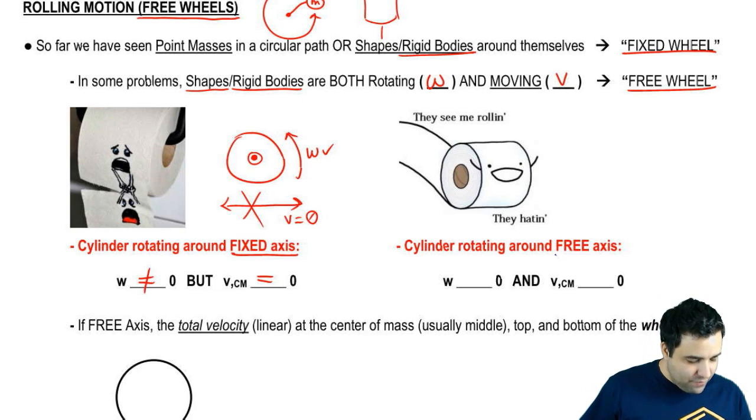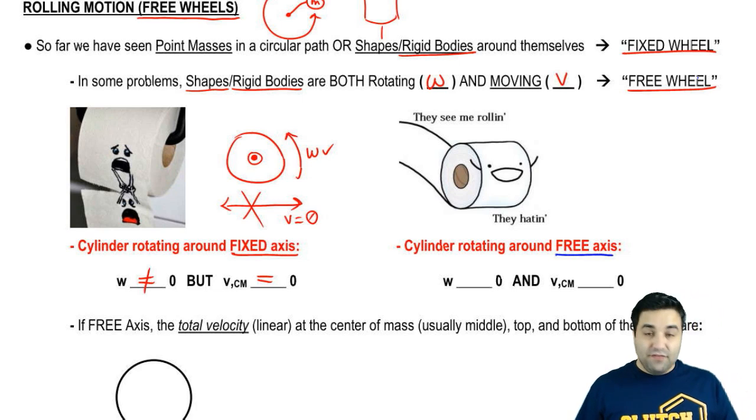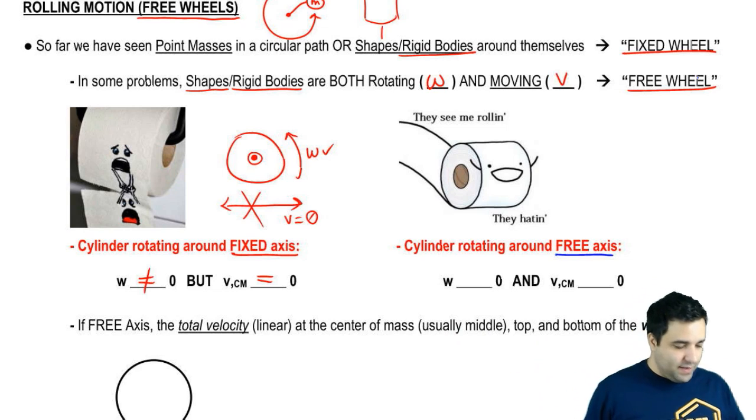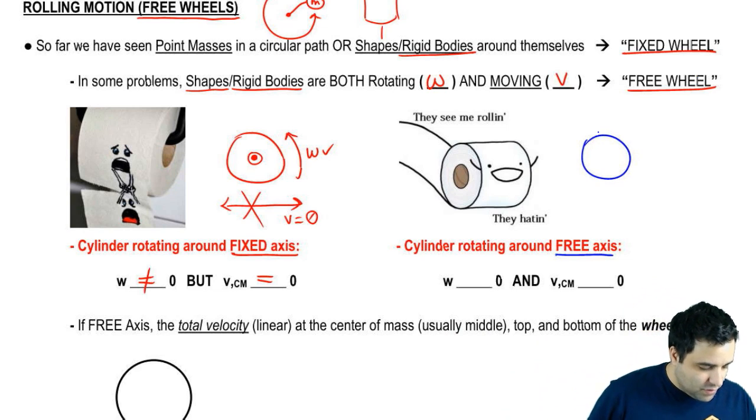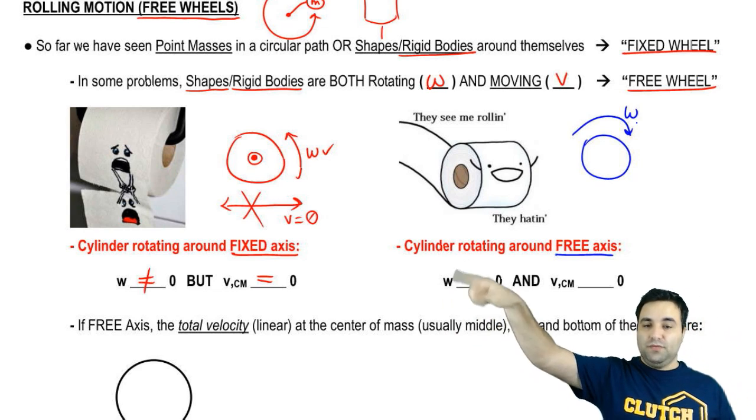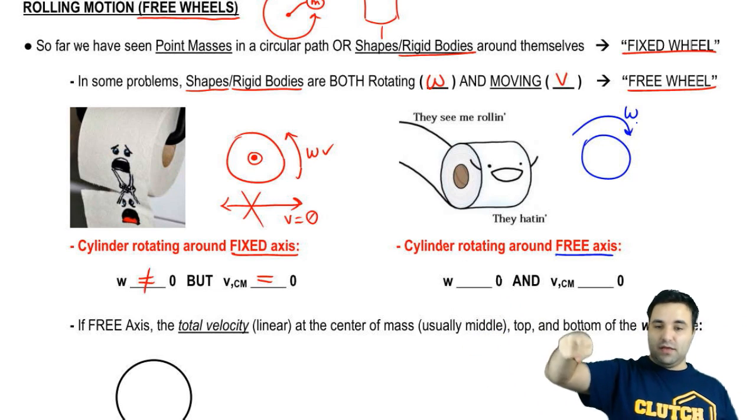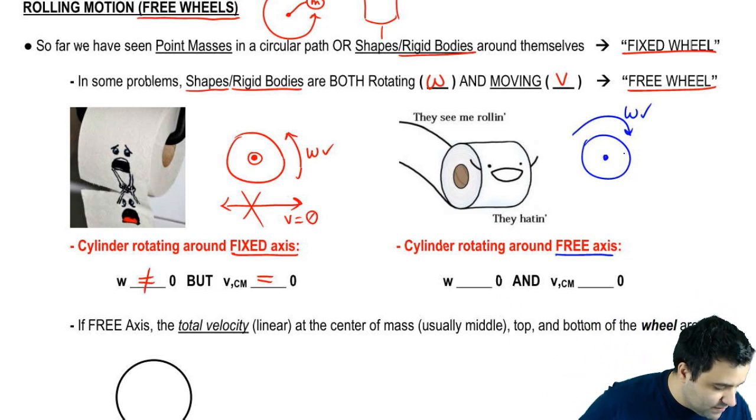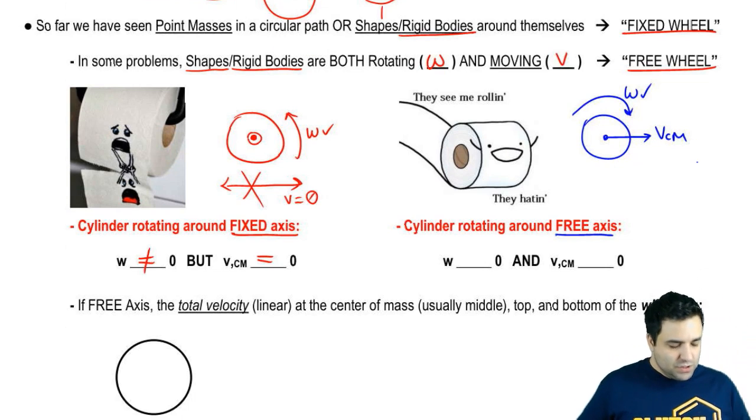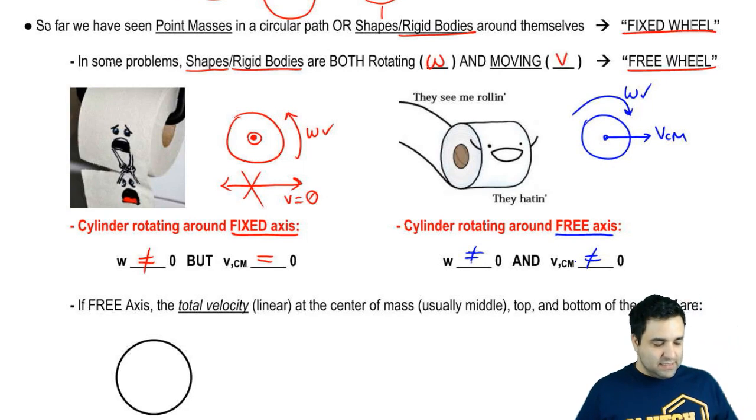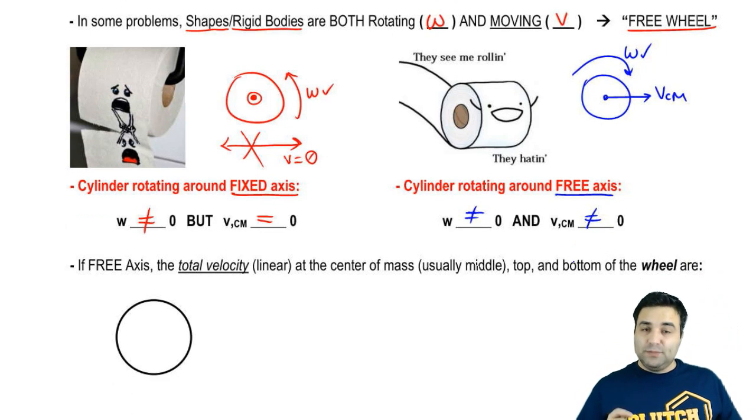Now, in the case of a free axis or a free wheel would be if you had a roll of toilet paper that is rolling on the floor. And it's doing two things here. So it's rolling this way. And it's not only rolling this way, but it's also moving. So if you combine this with this, you get this. So it's moving this way. So I can say that it has omega, and it has a velocity of its center of mass is moving to the right. So omega is not zero, and the velocity of the center of mass is not zero either.